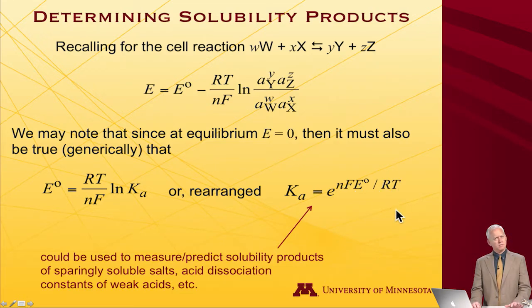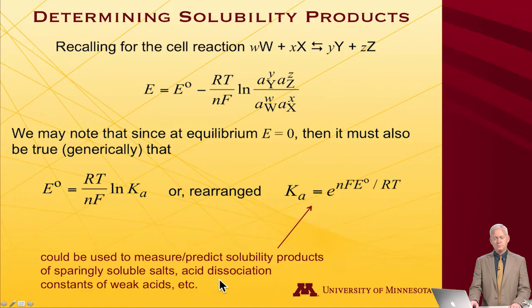And so, that can be terrifically useful if you would like to predict, in the sense of just going and looking up in tables what are the standard potentials, solubility products for sparingly soluble salts, acid dissociation constants for weak acids, and so forth. So let's take a specific example of that. Let's look at silver chloride.